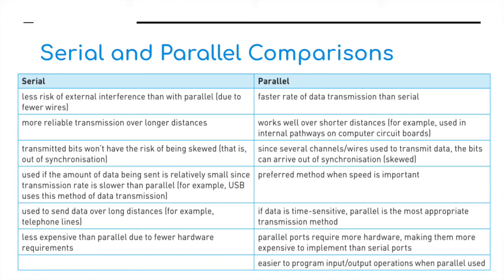For parallel transmission: it has a faster rate of data transmission than serial over short distances and works well over shorter distances, such as internal pathways on computer circuit boards. However, since several wires are used, bits can arrive out of synchronization or become skewed. It is the preferred method when speed is important and data is time-sensitive. Parallel ports do require more hardware, making them more expensive to implement than serial ports, though input-output operations are easier to program.